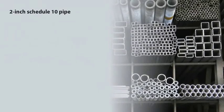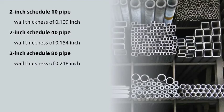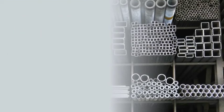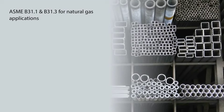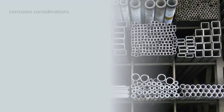The higher the schedule number, the thicker the pipe wall and the smaller the inside diameter. For example, a 2-inch schedule 10 pipe has an approximate wall thickness of 0.109 inch, a 2-inch schedule 40 pipe a wall thickness of 0.154 inch, and a 2-inch schedule 80 pipe a wall thickness of 0.218 inch. Guidance on pipe thickness calculations can be found in ASME B31.1 and B31.3. You may want to specify schedule 80 for fuel gas piping systems in areas where corrosion is possible, even if not needed from a pressure rating perspective, as adding material for corrosion considerations is a traditional practice in process plant design.